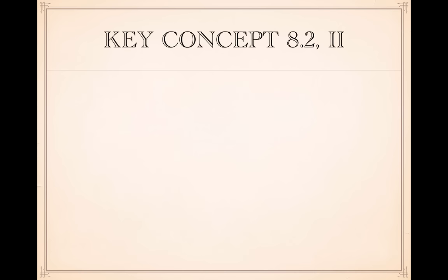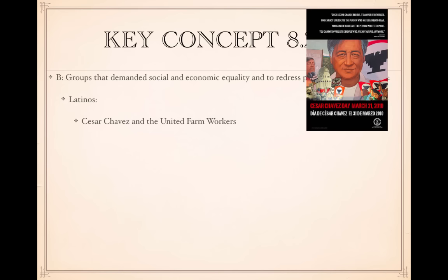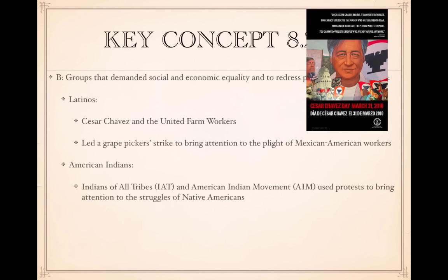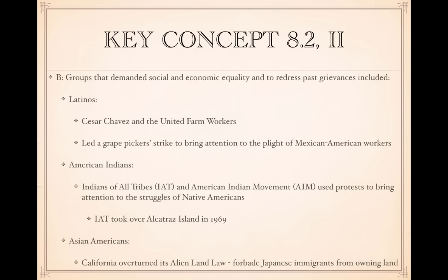Groups that demanded social and economic equality and sought to redress past grievances extended well beyond the African American civil rights movement. Latinos were led by César Chávez and the United Farm Workers, who led a grape pickers' strike highlighting the plight of Mexican American workers and went on a 28-day hunger strike, meeting with presidential candidate Robert F. Kennedy in 1968. American Indians — through the Indians of All Tribes and the American Indian Movement — used protests to bring attention to Native American struggles, including the occupation of Alcatraz Island in 1969. Asian Americans saw California overturn its alien land law, which had forbidden Japanese immigrants from owning land.